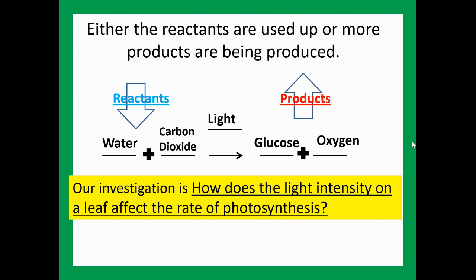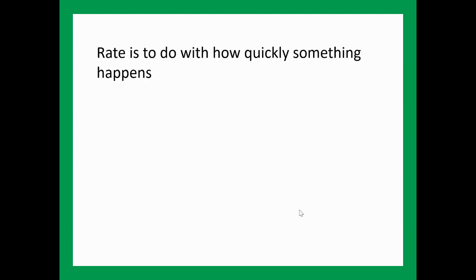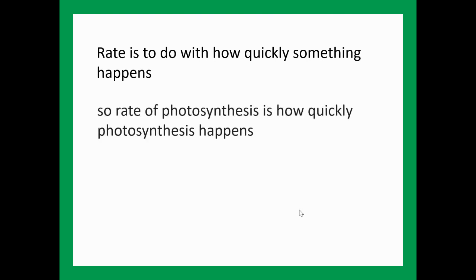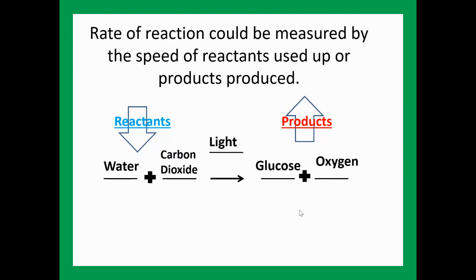The test we're looking at is: how does the light intensity on a leaf affect the rate of photosynthesis? Before we get started, we need to think about what does rate of photosynthesis mean. Rate is to do with how quickly something happens. A quick rate means things are happening fast; a slow rate means slowly. So the rate of photosynthesis is how quickly the chemical reaction actually happens. This can be measured by how quickly the products are made or how quickly the reactants are lost.